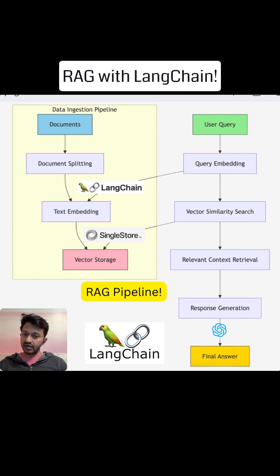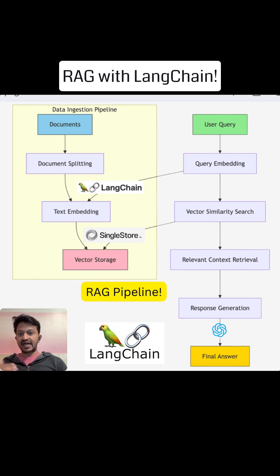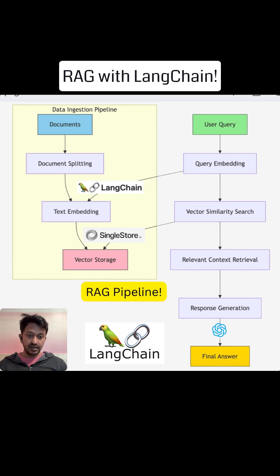In our tutorial, we are going to use SingleStore as a vector database — that's the storage part. When a user query comes in, for example if you want to chat with your custom documents and get answers directly, you ask the query through a UI. Your query also gets converted into an embedding using an embedding model, and using vector search or similarity search, it goes through the vector database to find the relevant chunk and relevant context.